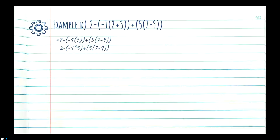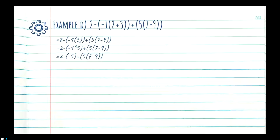We solve inside the first bracket: negative 1 times 5 is negative 5. Starting again at the beginning of the equation — are there any brackets? We see '2 minus' and there's a bracket. What's in the brackets now? We've already reduced it, so all that's left is negative 5.